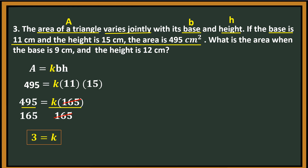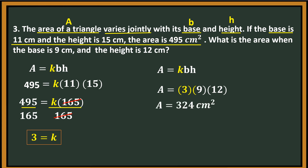The question is: what is the area when the base is 9 cm and the height is 12 cm? We're going to use the original equation A = K times B times H. By substitution, this time the base is 9, the height is 12, and K is 3. So area is equal to 3 times 9 times 12. Therefore, the area is 324 square centimeters.